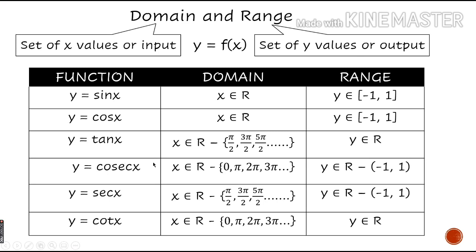For cosec x, since cosec x is 1 upon sin x, the domain is R minus the set of points 0, pi, 2 pi, 3 pi, etc. The range is R minus the open interval minus 1 to 1 — cosec x can take the values minus 1 and 1, but not any value strictly between them. For sec x, the domain is R minus the set of points pi by 2, 3 pi by 2, 5 pi by 2, etc., and the range is R minus the open interval minus 1 to 1. For cot x, the domain is R minus the set of points 0, pi, 2 pi, 3 pi, etc., and the range is the whole set of real numbers.